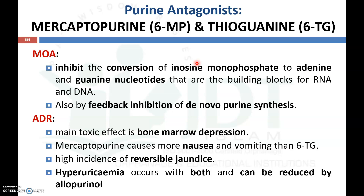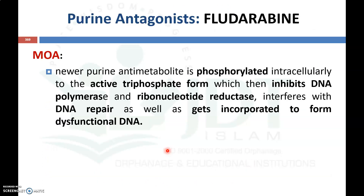Purine antagonists such as mercaptopurine and thioguanine inhibit the conversion of purine nitrogen bases to RNA or DNA guanine nucleotides, specifically inhibiting the conversion of inosine monophosphate to adenosine and guanine nucleotides — the building blocks of RNA and DNA. They also cause feedback inhibition of de novo purine synthesis. Adverse drug reactions include bone marrow suppression, nausea and vomiting (more with mercaptopurine), reversible jaundice, and hyperuricemia, which can be reduced using allopurinol.